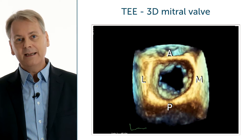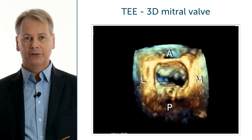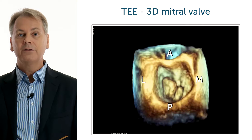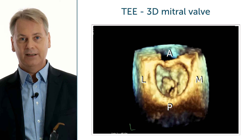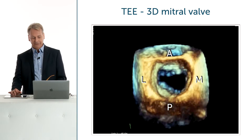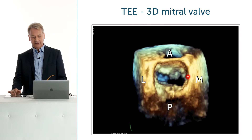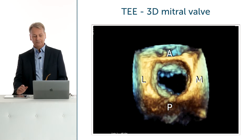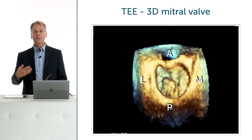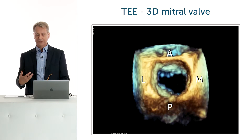The best way of displaying the mitral valve is to use a so-called surgical view. It's called the surgical view because that's how the surgeon actually sees the mitral valve when he cuts open the left atrium. Here he is looking right at the mitral valve from the left atrium towards the anterior leaflet and the posterior leaflet. There is a certain convention for how we should display the valve so that we can easily recognize the different portions.